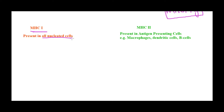MHC class 1 is present in all nucleated cells of our body. When I say all nucleated cells, which cell would not have MHC class 1? If your answer is RBC, you are correct — RBC does not have a nucleus. So MHC class 1 is absent in RBCs. Whereas MHC class 2 is present only on antigen-presenting cells, which we have discussed in the previous video.